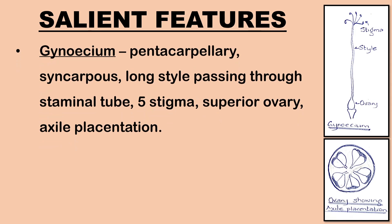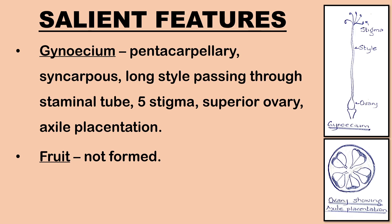Gynoecium: pentacarpellary, syncarpous, style long passing through the staminal tube, stigmas 5, ovary superior, pentalocular with axile placentation. Fruit: not formed in Hibiscus rosa-sinensis. In some species of hibiscus, it is a loculicidal capsule.